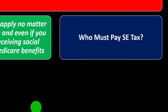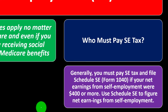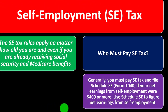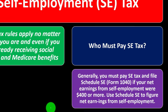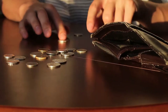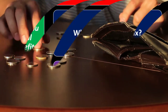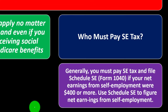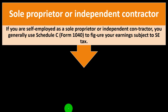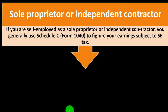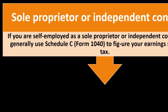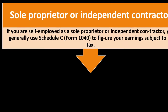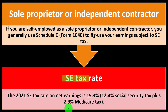So who must pay SE or self-employment tax? Generally, you must pay self-employment tax and file Schedule SE, Form 1040, if your net earnings from self-employment were $400 or more. If you had a very small amount, maybe you don't have to report it — but $400 is pretty small. Use Schedule SE to figure net earnings from self-employment. If you are self-employed as a sole proprietor or independent contractor, you generally use Schedule C, Form 1040, to figure your earnings subject to the SE tax.